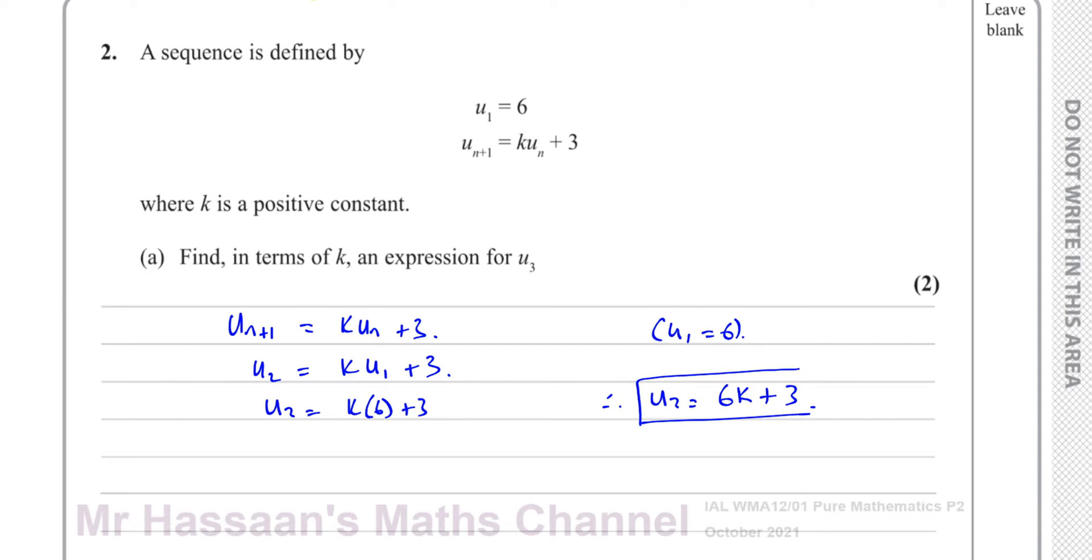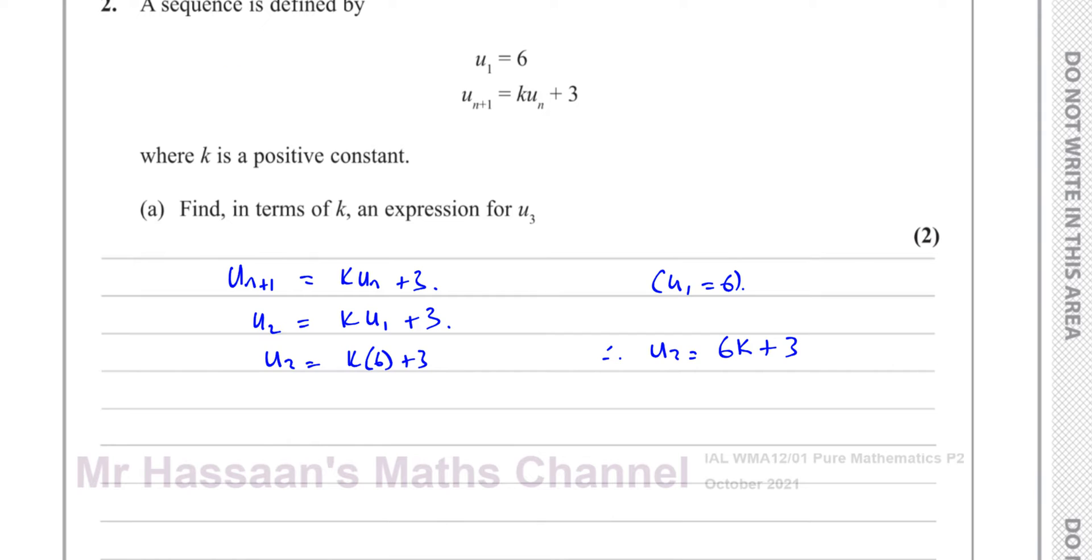That's not what we have to find in the end, we have to find U3, so I won't box that. Now once I find what U2 is, I can find what U3 is, because U3 is going to be K times U2 plus 3.